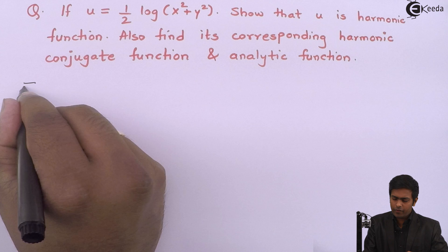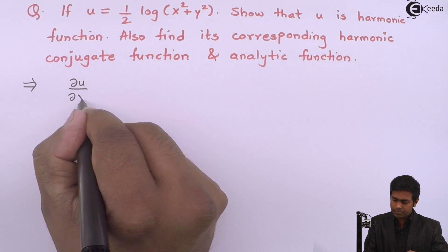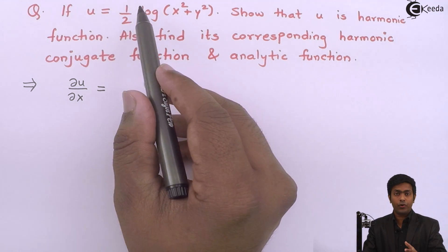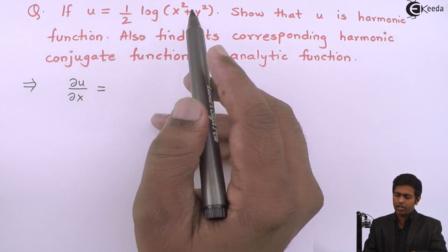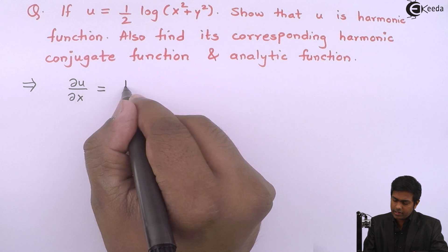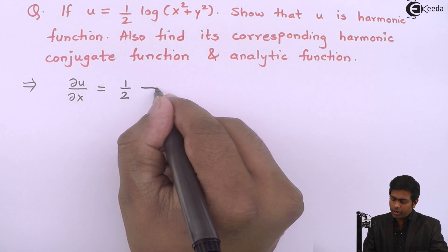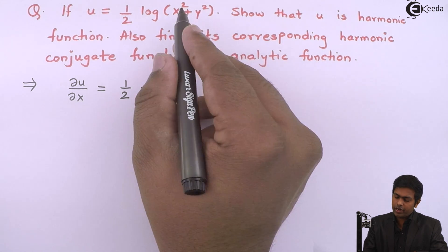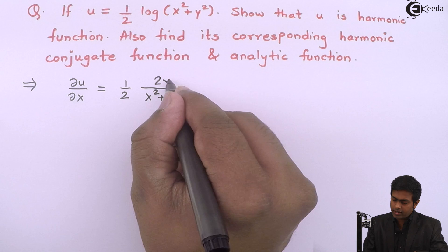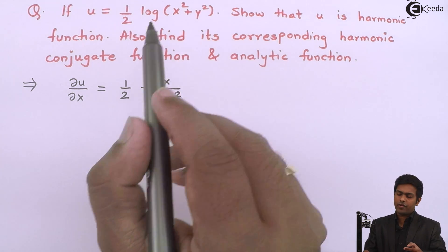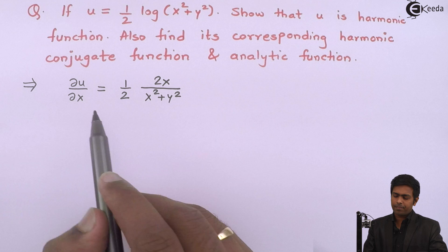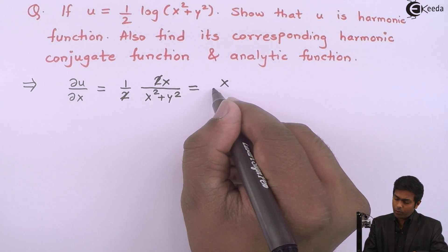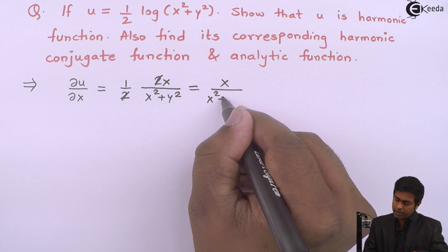We will find the value of ∂u/∂x. So ∂u/∂x is the partial differentiation of u with respect to x. Here we get 1/2 as it is. The derivative of log is 1/(x² + y²) into the derivative of x², which is 2x, and the derivative of y² is 0 since we are differentiating with respect to x partially. This 2 and 2 cancel, so we get x/(x² + y²).